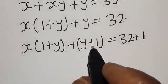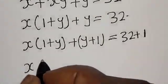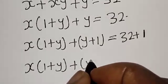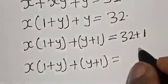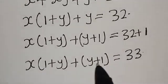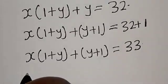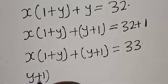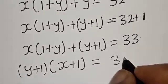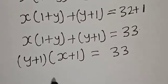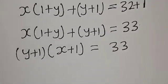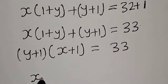Now we have (1 plus y) and (1 plus y). So x times (1 plus y) plus (y plus 1) is equal to 33. Now (1 plus y) is common here, so we bring it out: (y plus 1) times (x plus 1) is equal to 33. Remember that x and y are positive integers.